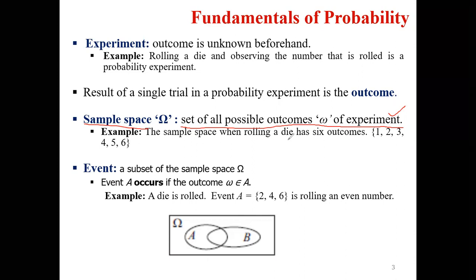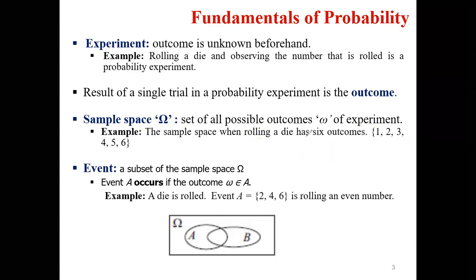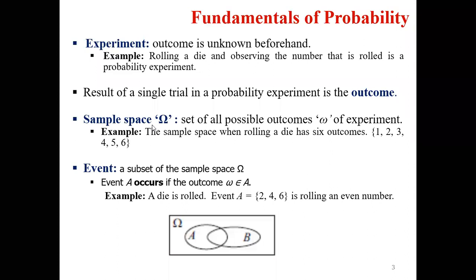What we call the sample space is the set of all possible outcomes of a particular experiment. For a coin, the sample space is head and tail. For a die, the sample space is 1 to 6 — six sides. If checking a product, the sample space is defective or non-defective. All possible outcomes listed together form the sample space.